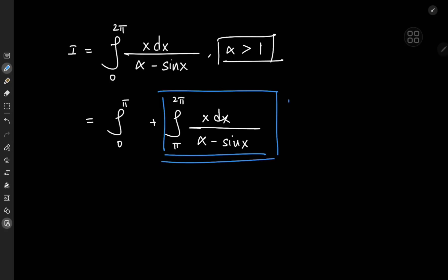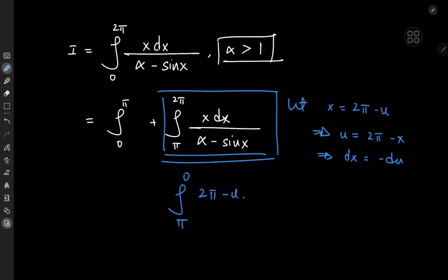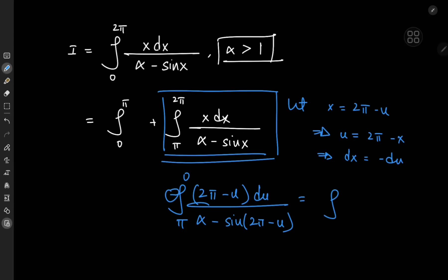I can fix that by the substitution x = 2π - u, which implies u = 2π - x and dx = -du. As x approaches π, u approaches π, and as x approaches 2π, u approaches 0. So the second integral becomes the integral from π to 0 of (2π - u)(-du) divided by (α minus sin(2π - u)). Expanding sin(2π - u) gives -sin u, so after switching limits to eliminate the negative sign, we have the integral from 0 to π of (2π - u) du divided by (α + sin u).